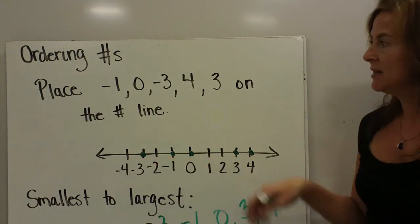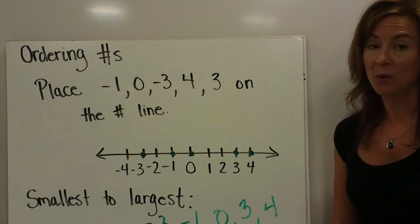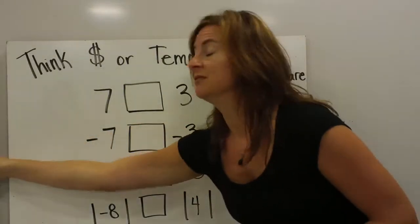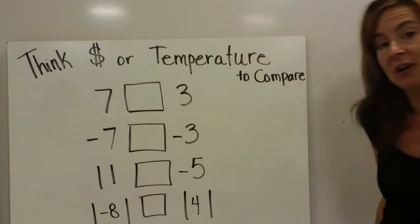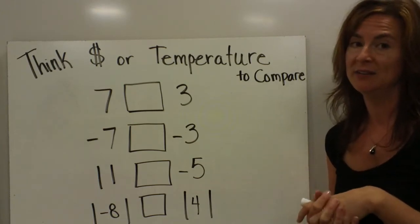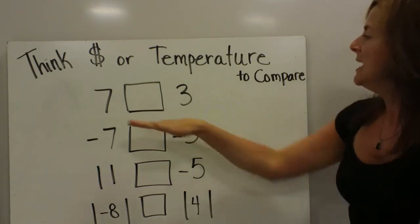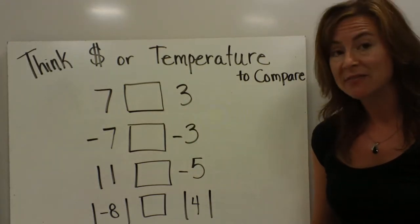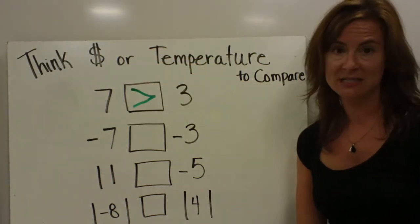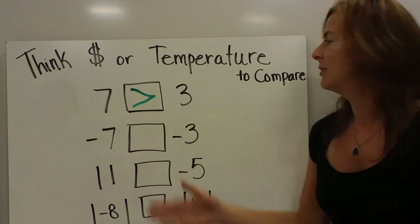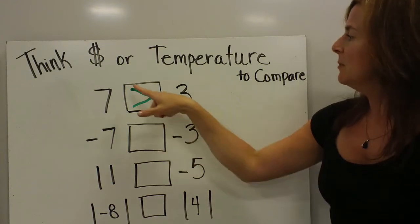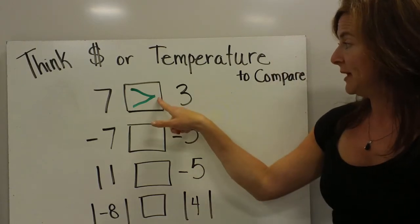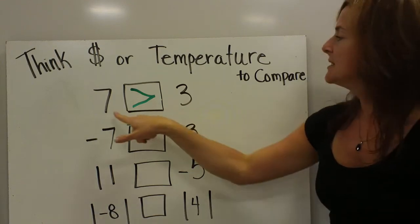Since we don't always want to draw out a number line every time we put a group of integers in order, I'm going to show you a couple of things about comparing and ordering integers. One hint I always give my students is to think about money or temperature — that might help you wrap your brain around putting negative and positive numbers in order. This one is pretty elementary: comparing 7 to 3. We know that 7 is greater than 3, so I indicate that with a greater than sign. The larger opening faces the larger number, and the smaller point points to the smaller number.